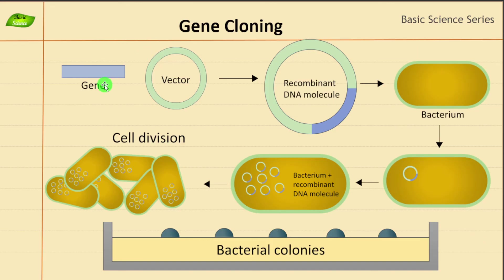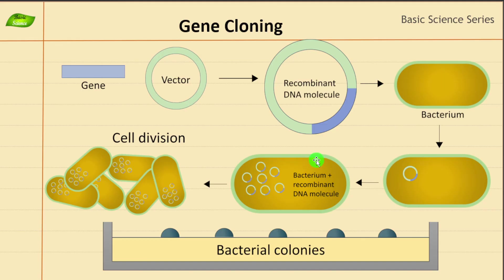Let's summarize: we need a gene for gene cloning, we need a vector — selecting a vector is highly important — then we construct a recombinant DNA molecule and insert it inside the bacteria. After that we grow these cells on specific media and have cells containing the recombinant plasmid. You can isolate this plasmid and start with another gene if you want to build a library of different genes — this can be called amplification of the cloned gene.